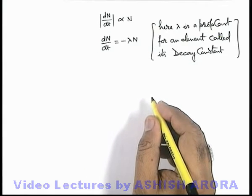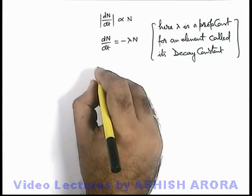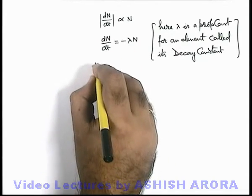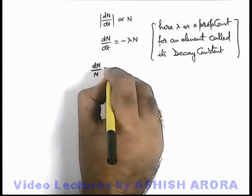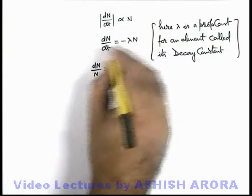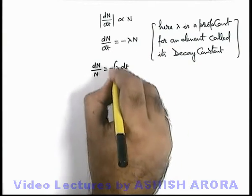And in this situation further we can analyze this expression as: dN by N is equal to minus λ dt. We are rearranging the terms, and if we integrate it.